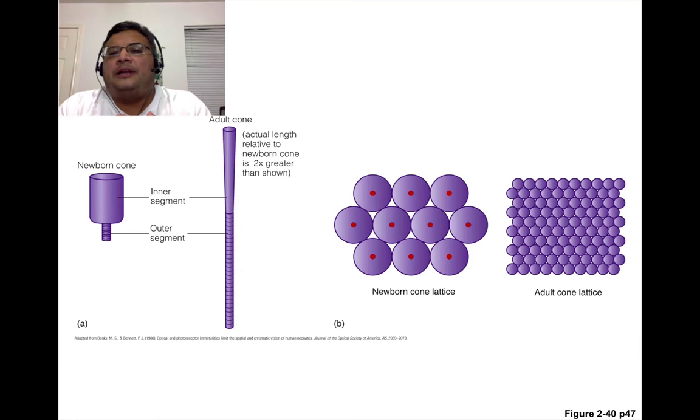The other thing too in developmental, baby's eyes aren't like adult eyes at all. Baby's eyes still have a lot of developing to do when they're born. If you look at a baby's, the cone in a baby's eyes versus an adult cone, it's like they're two completely different neurons. The baby's cones are much fatter and larger than the adult cone.